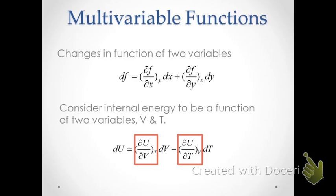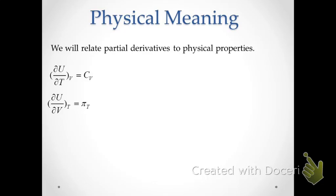So dU/dV at constant T represents changes in internal energy when the volume changes, holding temperature constant. And dU/dT at constant V shows how internal energy changes when we change temperature, holding volume constant. What's important is that we will be relating these partial derivatives to changes in physical variables that occur when we measure things in the lab. We will therefore ascribe physical meaning to each of these partial derivatives.